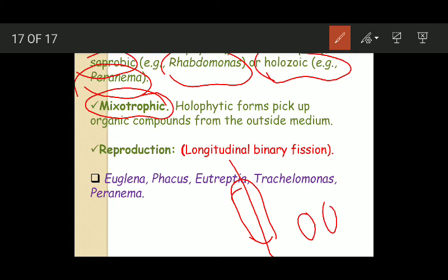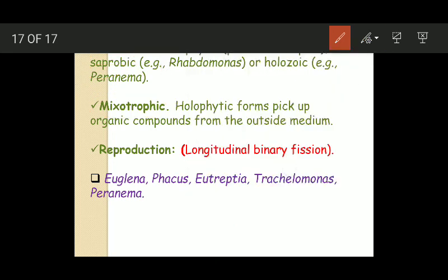Now some examples. Important examples of euglenoids include Euglena, Phacus, Eutreptia, Trachelomonas, and Peranema.